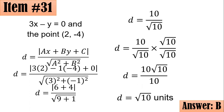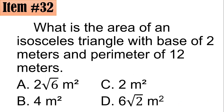Item 32: What is the area of an isosceles triangle with a base of 2 meters and a perimeter of 12 meters? Did you go for A, B, C, or D?